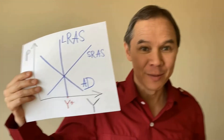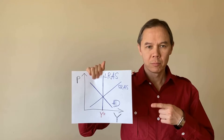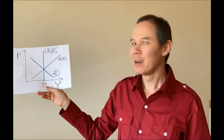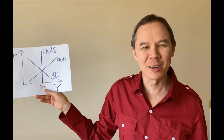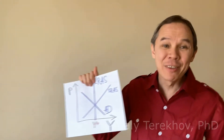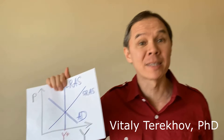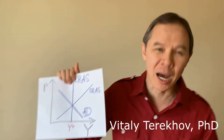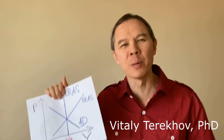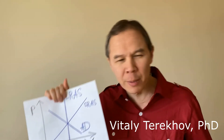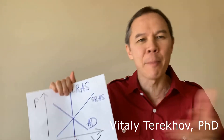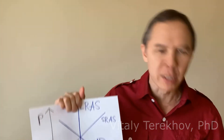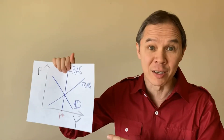Look at this picture. What a beautiful picture. Everything we know about economics is in this picture: gross domestic product, inflation, unemployment, fiscal policy, monetary policy, supply, demand, money supply, money demand, economic growth, and so on — all of it is in this picture.